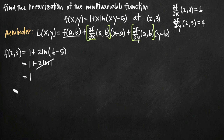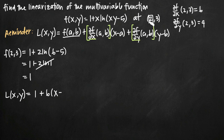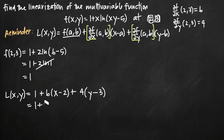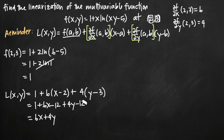Now we can plug everything into our linearization equation. L equals f(a,b) — which is 1 — plus the partial derivative of f with respect to x at the point, which is 6, times (x - 2), plus the partial derivative of f with respect to y at the point, which is 4, times (y - 3). Simplifying: 1 + 6x - 12 + 4y - 12. Ordering terms, we get 6x + 4y, and -12 - 12 + 1 gives -23. So the final answer is L = 6x + 4y - 23.